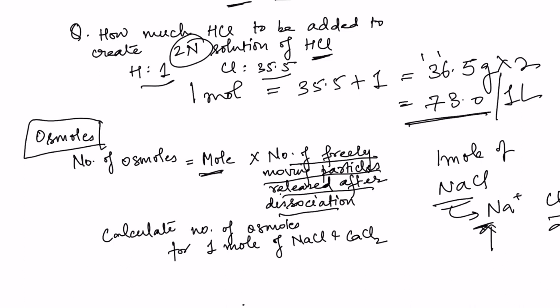One mole of NaCl equals 2 osmoles, or 1 millimole of NaCl equals 2 milliosmoles. In physiological conditions, concentration of various substances is in millimoles and osmolarity is talked about in milliosmoles. Read the question carefully — note whether it says moles or millimoles.